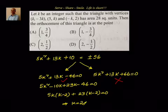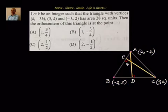Once we have k = 2, we substitute back into the triangle's vertices. The orthocenter is the point of intersection of altitudes. We take altitude AD and altitude CE, so the orthocenter is the intersection of AD and CE.